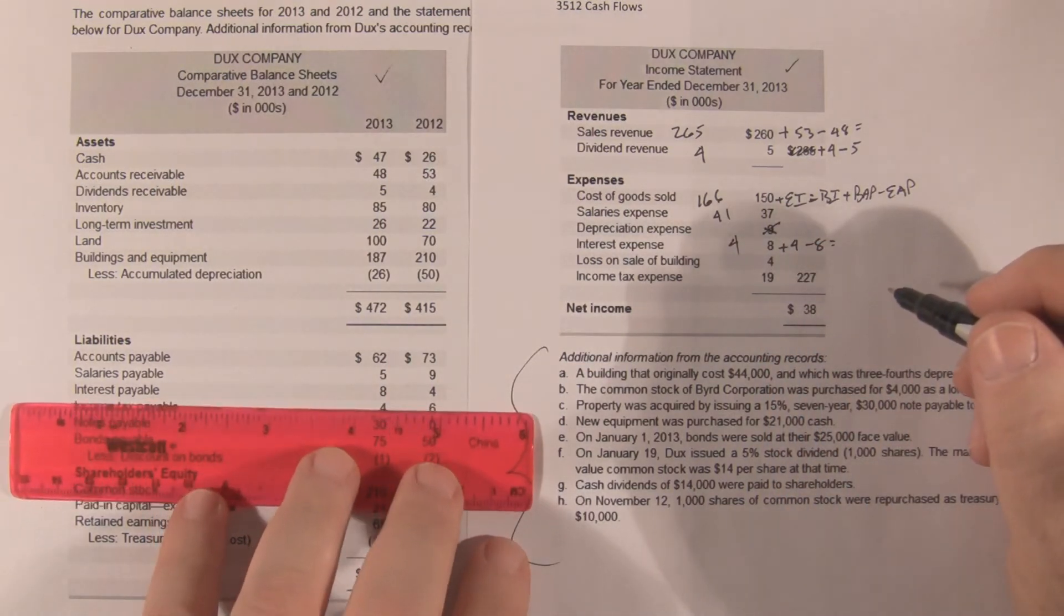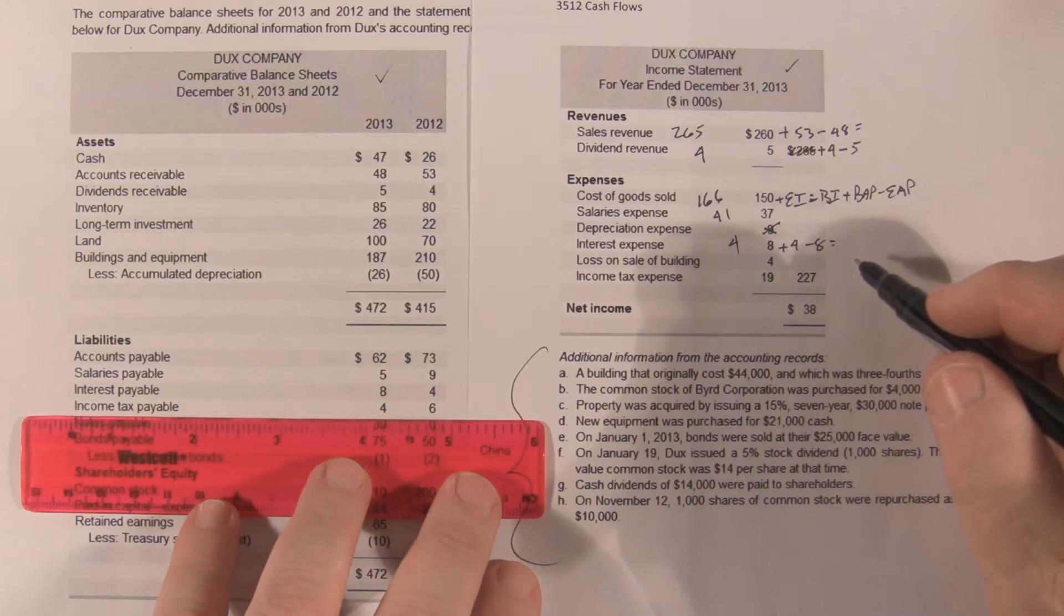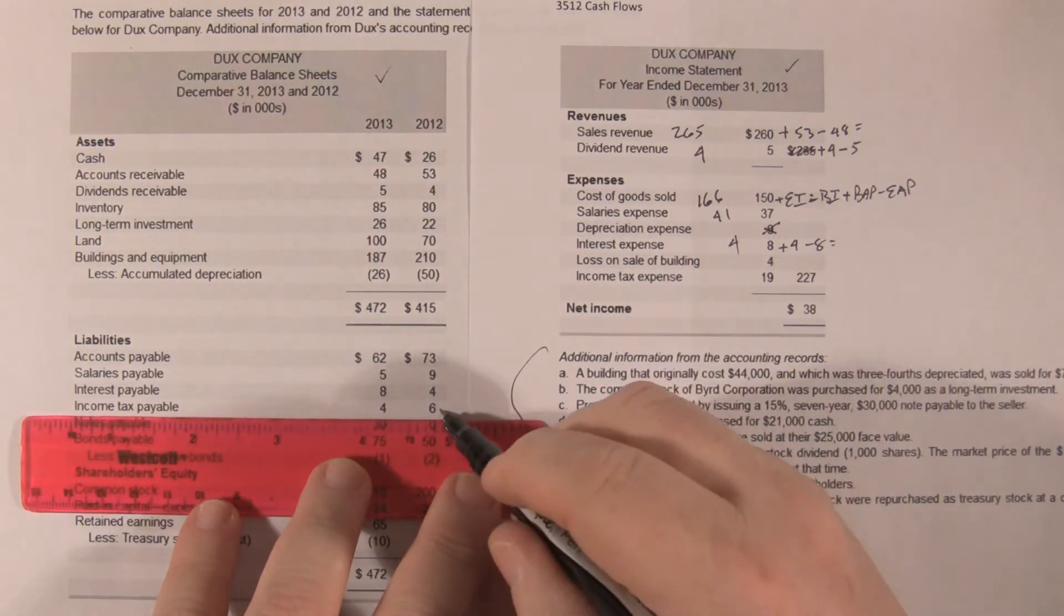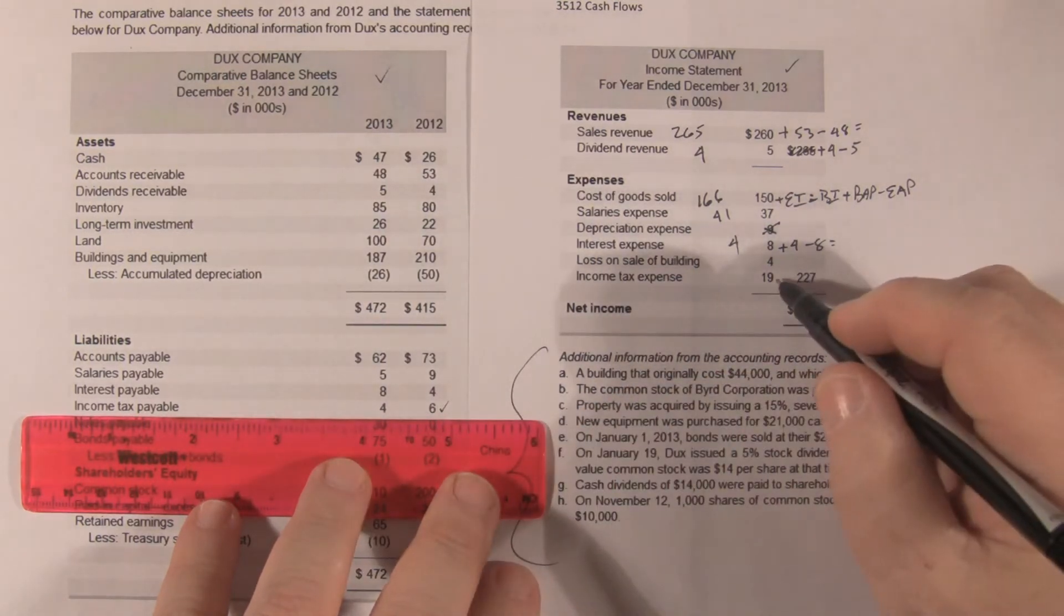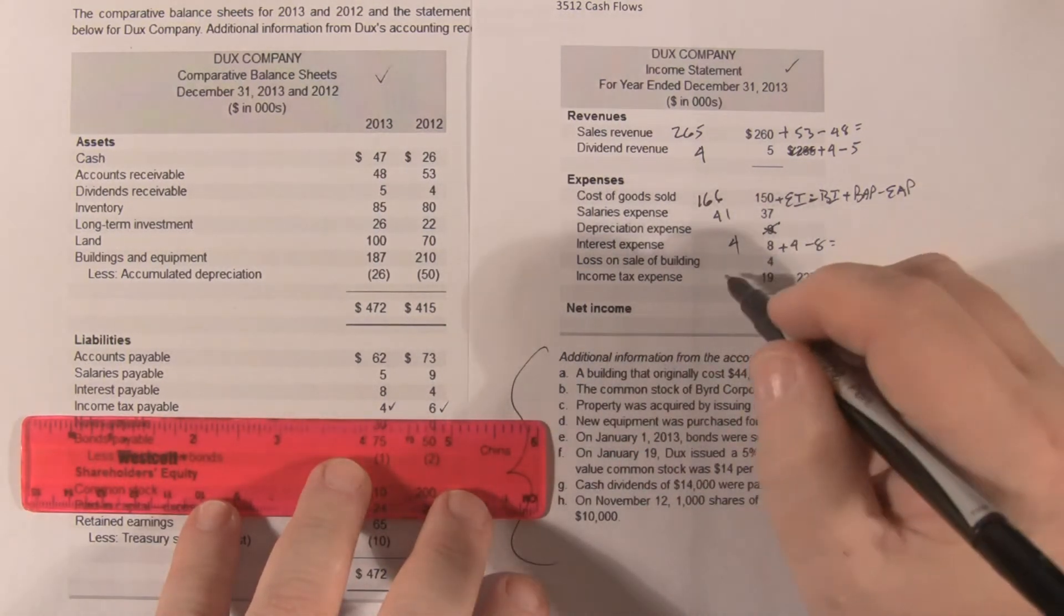Now the loss on the sale of the building, again we don't need to handle that. Income tax payable is the same. Our income tax expense, 19, plus our beginning tax payable of 6, that's 25, minus our ending tax payable of 4, cash, 21.